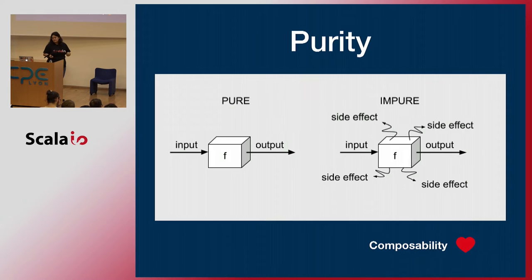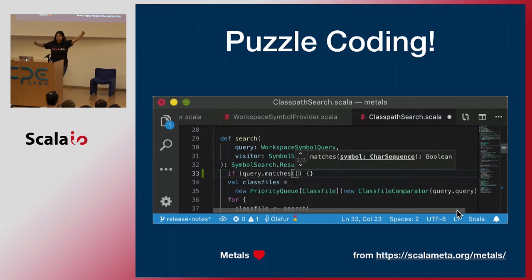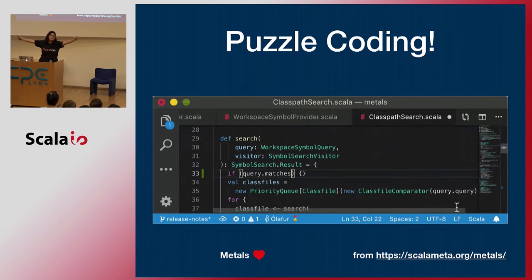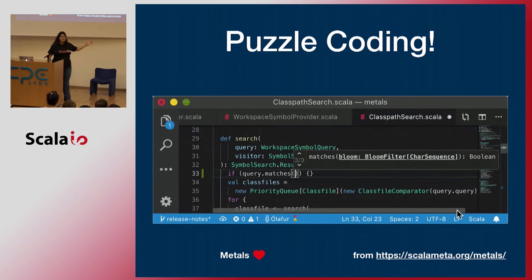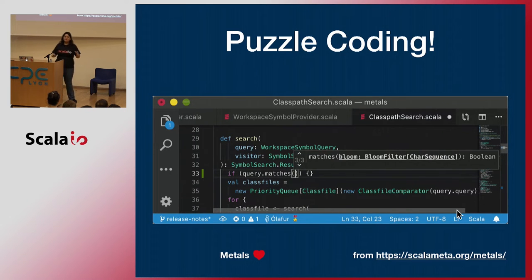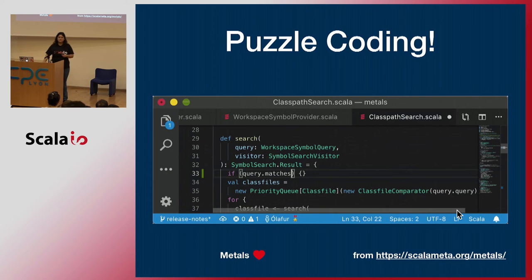One of my favorite things about purity is that it allows me to do what I call puzzle coding. I have a type, and I know I want to go to another type, so I need to find a function that takes me from type A to type B. This is really cool with IDEs — this is actually Metals. If you've never heard of it, go check it out because it's going to blow your mind. I don't need to fully understand what I'm doing; all I have to do is connect the dots, and then the compiler tells me: boom, it works. It doesn't work all the time, but it works most of the time — which is good because I'm lazy.